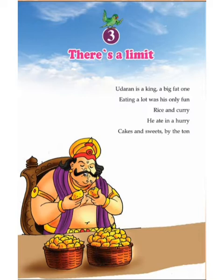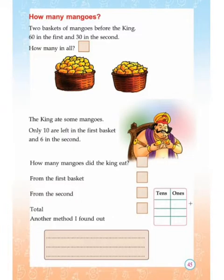Eating a lot was his only fun — rice and curry he ate in a hurry, cake and sweets by the turn. So you can see the king is a fat one. Now look here — how many mangoes? Two baskets of mangoes before the king. You can see two baskets.